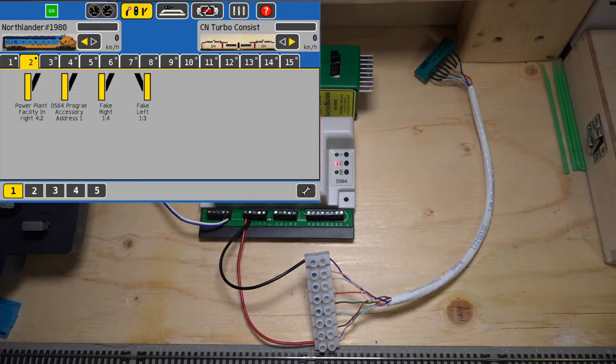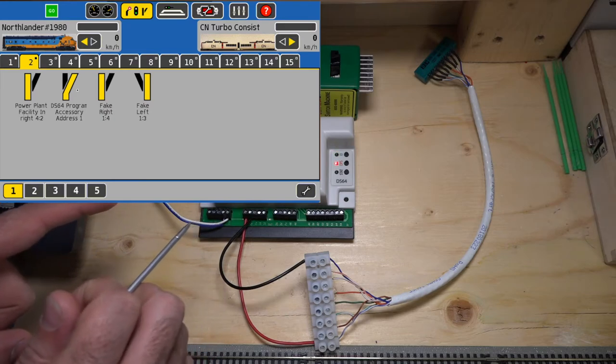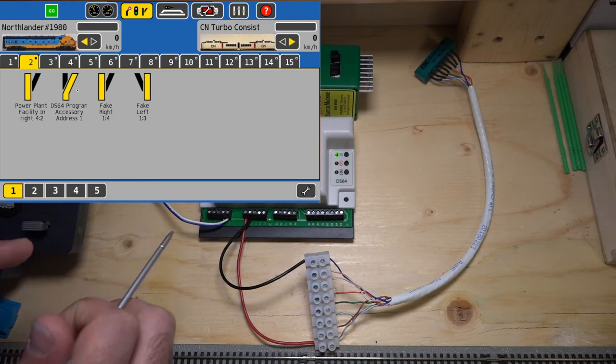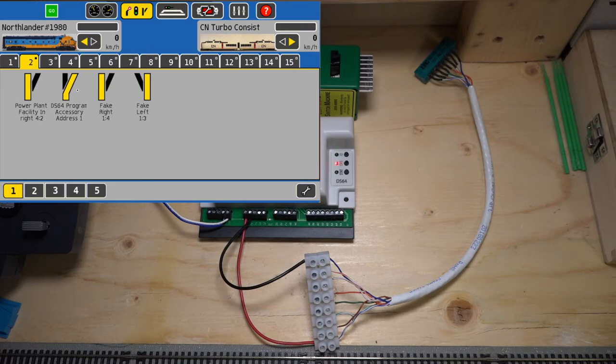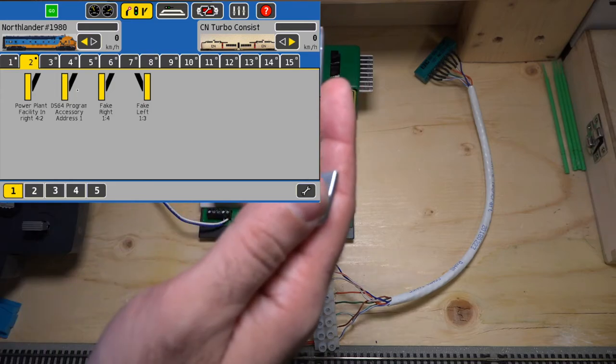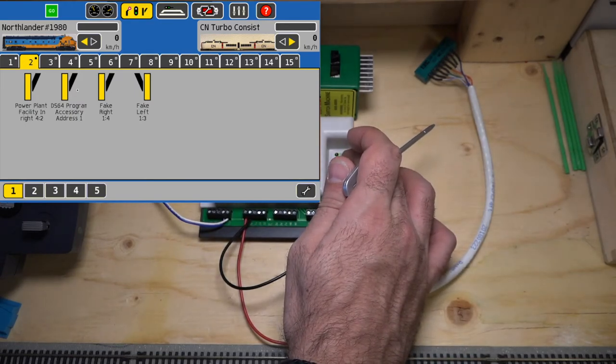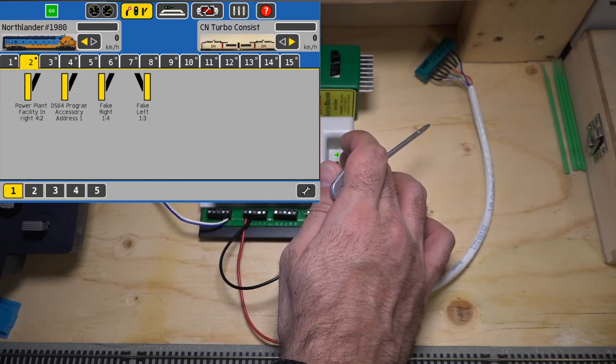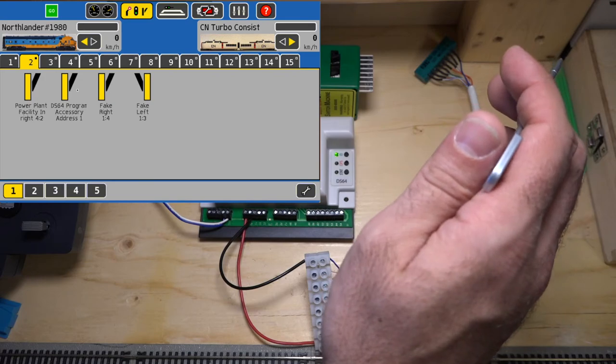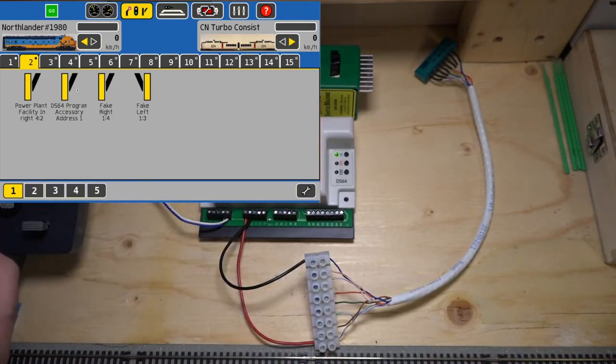And it is blinking alternately. Now it says to throw a closed switch. So right now it's enclosed. We tap on the DS64 program accessory address number one. That is open switch. Now, by doing this, it is programming the DS64 to operate with solenoid switches. We don't want that. We want stall motors. So we're going to touch this switch again to close the switch. All right, that's it. Now, come back to the DS64, press and hold it. So that is good.